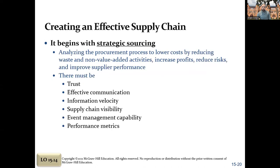To create an effective supply chain, you need to strategically source, be able to trust and communicate, and quickly share information — that's what velocity of information means. Know all the links of your chain — that's what visibility refers to — and be able to manage various events quickly and timely, then measure those through various performance metrics. All right, that's Chapter 15. We'll see you in the next chapter. Thanks, everyone.